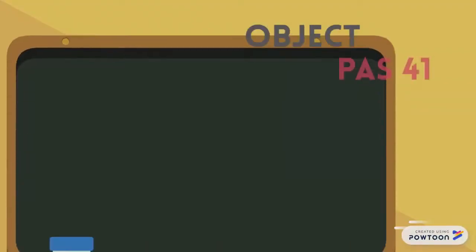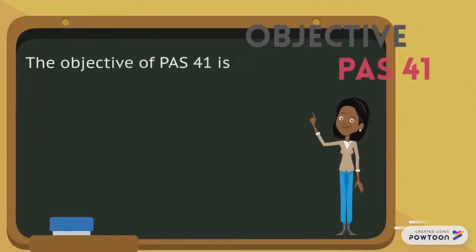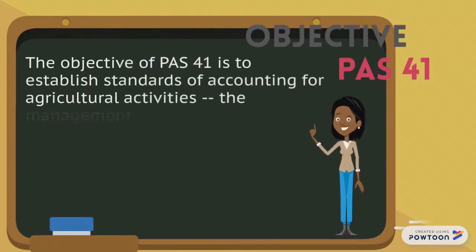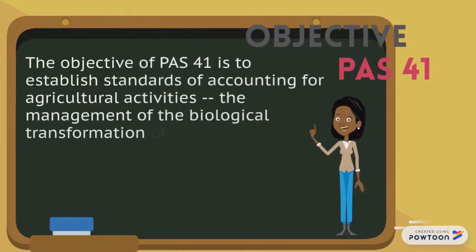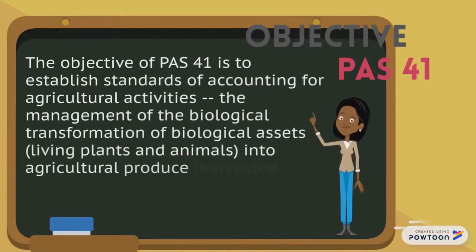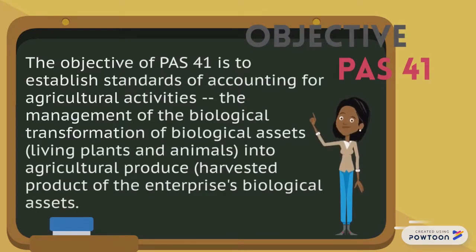PAS 41 Agriculture. The objective of PAS 41 is to establish standards of accounting for agricultural activity, specifically the management of the biological transformation of biological assets into agricultural produce.